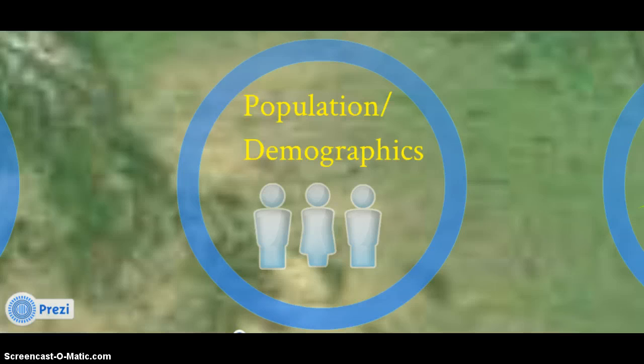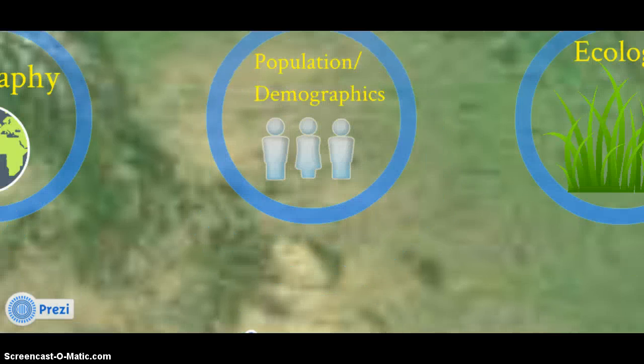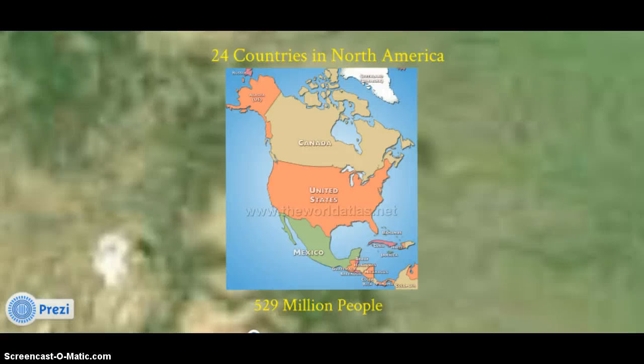Populations and demographics. My name is Molly Kovic, and I will be exploring this with you. North America is made up of 24 countries and contains 529 million people.